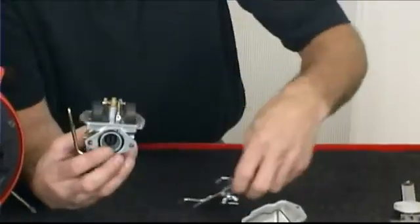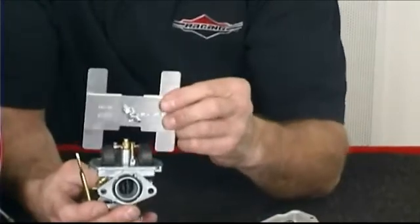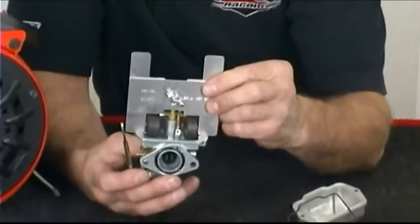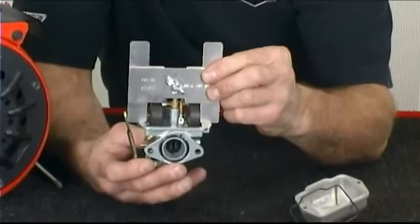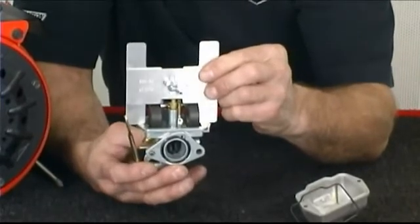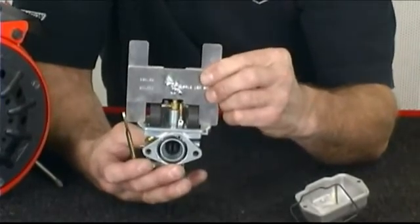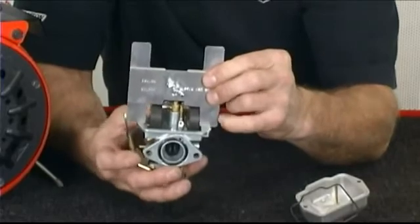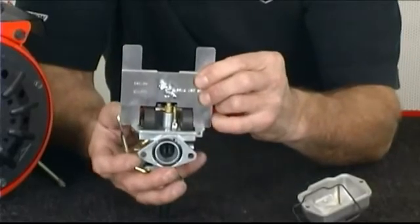The second method is using an aftermarket tool such as this one from fastermotors.net. With this tool, float height can be measured, adjusted, and locked in place for a quick reference. Again starting with this tool set at 860, check both float heights and adjust.